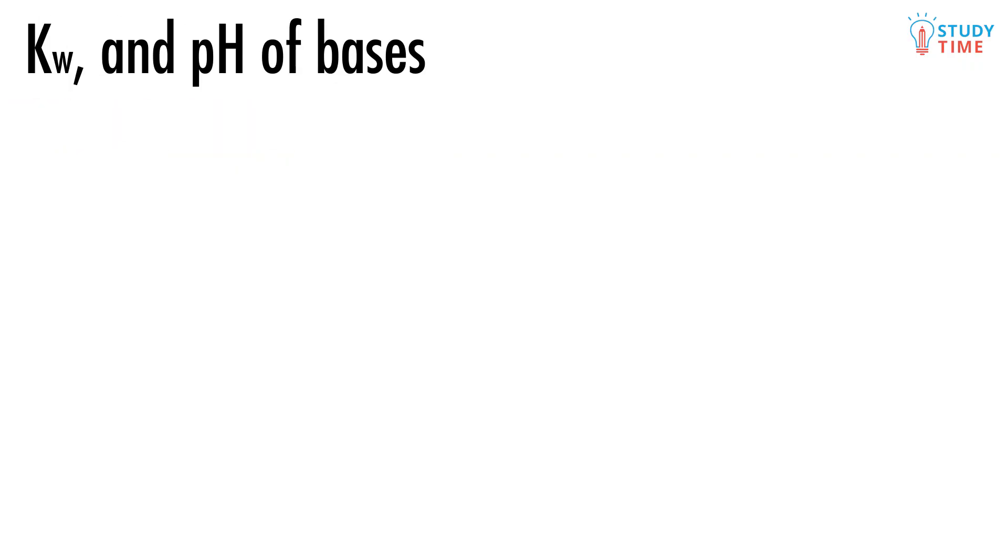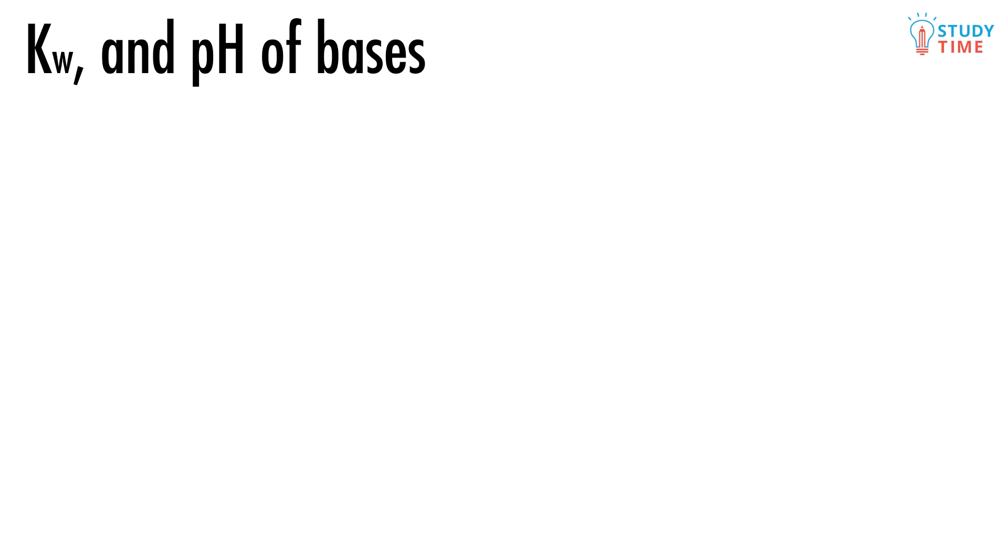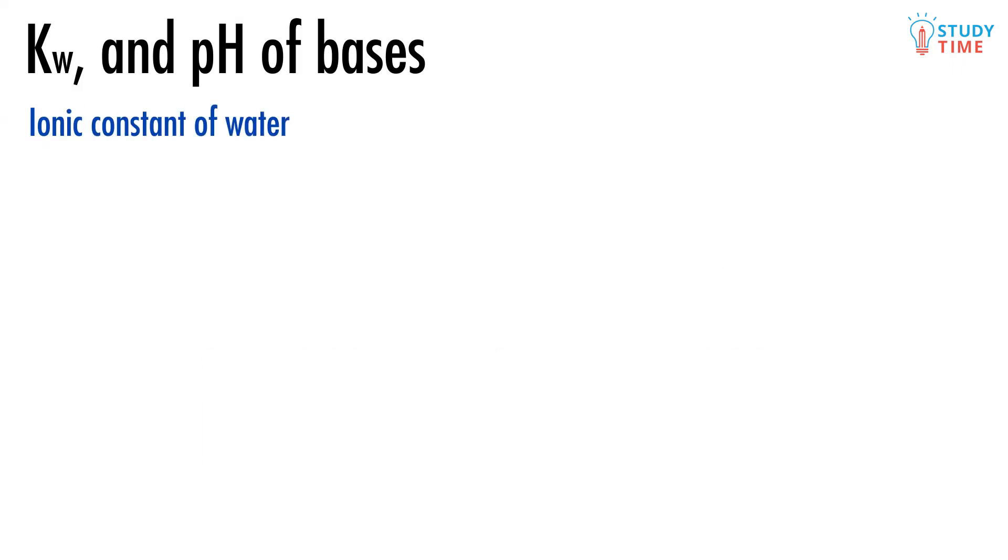Can we use this same idea to find the pH of a base? Well, the short answer is sort of. We can use the same method, but it requires a few extra steps. That's because a base reacts with water to form hydroxide ions, OH-, not hydronium ions. For example, sodium hydroxide is a strong base. So in order to find the pH of a strong base like NaOH, we need to use the idea of the ionic constant of water, which we normally write as Kw.